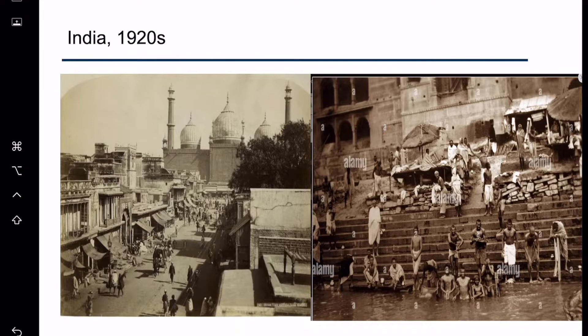How about India? The photo on the left is a street view for India — they already had some beautifully built buildings and the street view looked nice, quite similar to Taiwan in terms of living standard. On the right, probably near the Ganga River, some people were not nicely dressed. From these two photos, you will notice that the living standard in India was quite similar to Taiwan in the early 1900s.